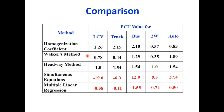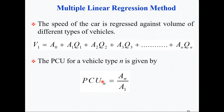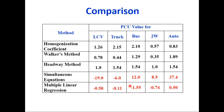Comparing these methods — Homogenization Coefficient, Walker's, Headway, Simultaneous Equations, and Multiple Linear Regression — they give different PCU values for the same vehicle category on inter-urban roads. For Light Commercial Vehicles (LCV), the PCU factor changes from 0.78 to negative 19. This reveals a key weakness of the Simultaneous Equations and Multiple Linear Regression methods: any change in the sign of a coefficient results in a negative PCU factor, which cannot be explained by any logic. Therefore, these methods are not widely used in literature.